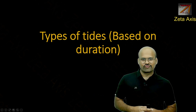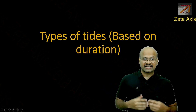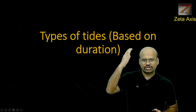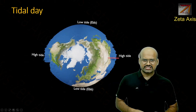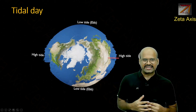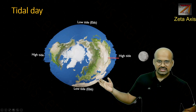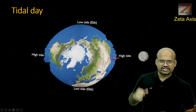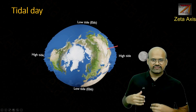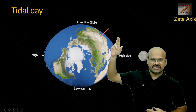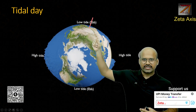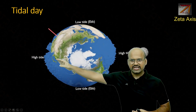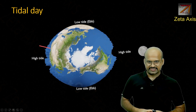In this video we are going to discuss about types of tides or classification of tides. The first classification will be based on duration, and to understand this we must understand what a tidal day is. We see that this is the region where there is high tide, directly under the moon. As the earth rotates, this point will face the low tide region, then move again into the high tide region.